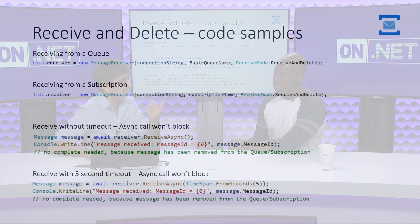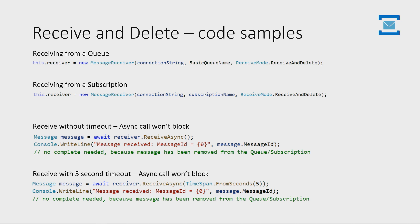In the receive and delete code sample, we have the message receiver class that allows you to call receive async — this will not block your thread. You can call receive and have it wait as long as a message comes in, or you can call receive with a timeout. The receive async method works with peek lock as well, but the message handler is recommended because it offers a much more straightforward programming model.